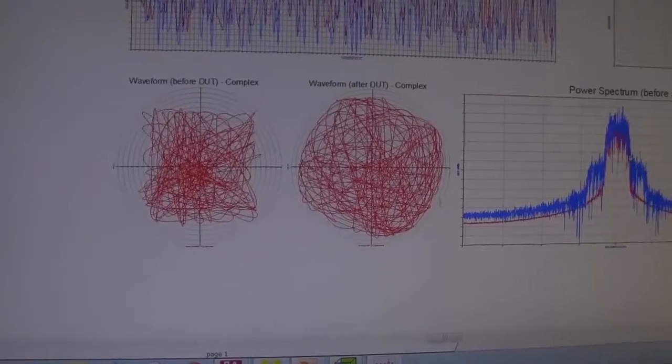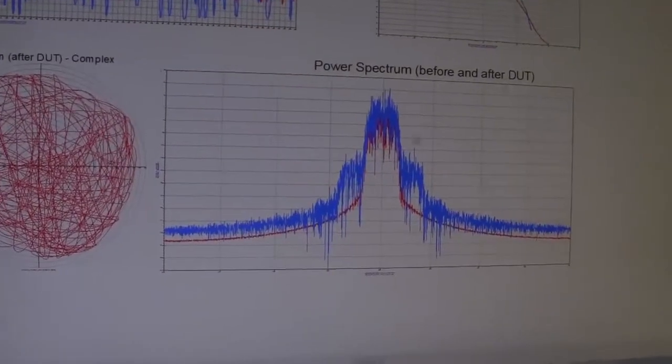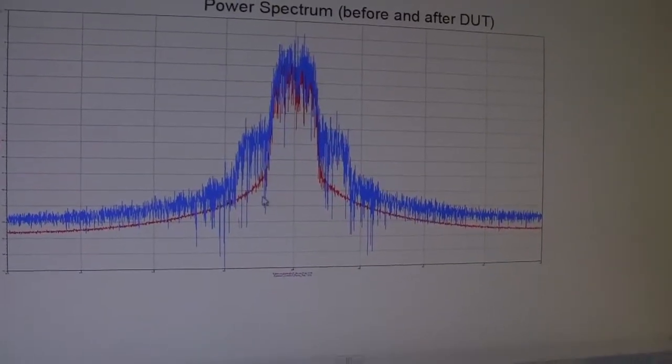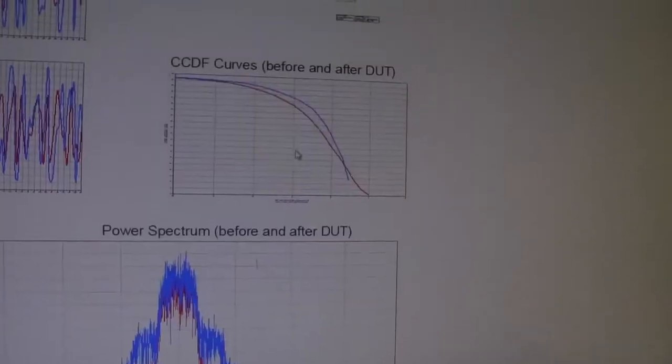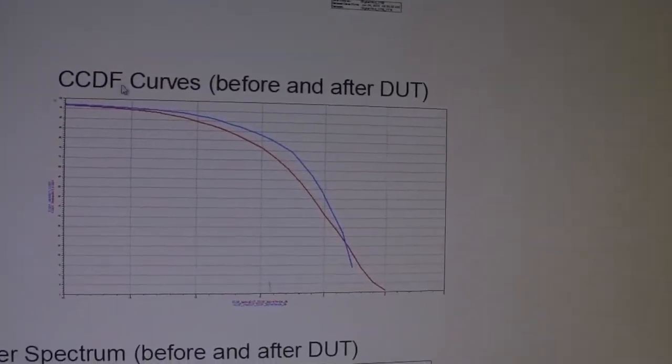You also get the complex data, the trajectory diagram. This is before the complex data—the complex data before and this is after. You get also power spectrum, so you can see the power spectrum at the output, and it provides the CCDF curves.